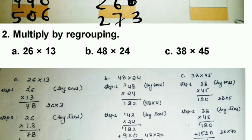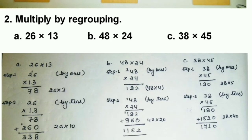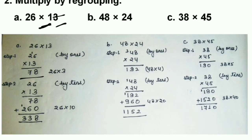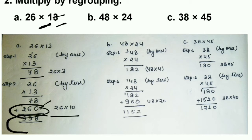Now multiplying with regrouping. First: 26 multiplied by 13. Multiply by ones first — 26 times 3 equals 78. This is the ones part. For tens place, put a zero after, then 26 multiplied by 10 gives 260. Adding 78 and 260 gives the answer 338.